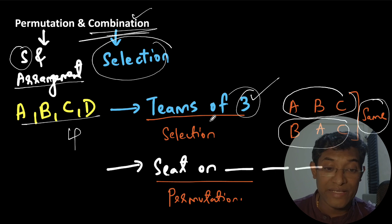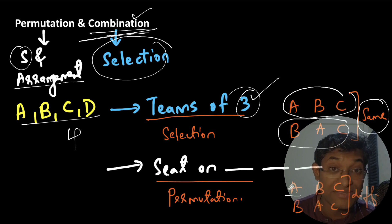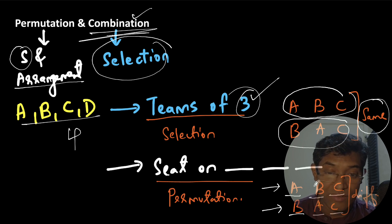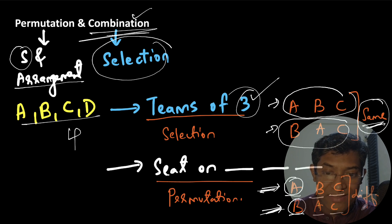Let's say in one possible arrangement, I've selected A, B, and C, and A is sitting on the first seat, B on the second, and C on the third. In another arrangement, B is sitting on the first seat, A on the second, and C on the third. Now these two arrangements are different — even though it's the same three people A, B, and C, A is at position one in the first arrangement but B is at position one in the second. So these two arrangements are different, and that's why we use permutation.